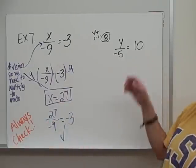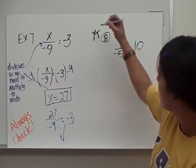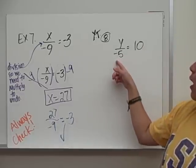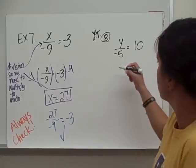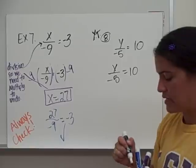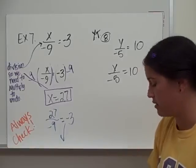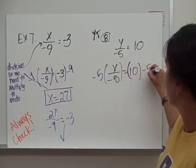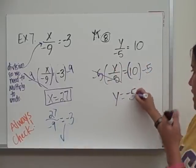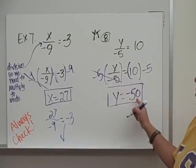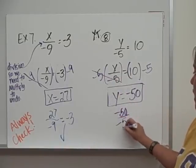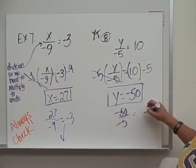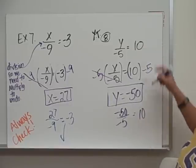Now you try example 8: y over negative 5 equals 10. Pause the video and replay when you're ready for the answer. This is a division equation, so we undo division with multiplication. Multiply both sides by negative 5. 10 times negative 5 is negative 50, so y equals negative 50. Checking: substitute negative 50 in for y. Negative 50 divided by negative 5 — a negative divided by a negative gives a positive — 50 divided by 5 is 10, which is what we wanted. Checked out.